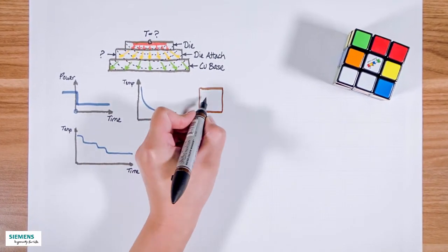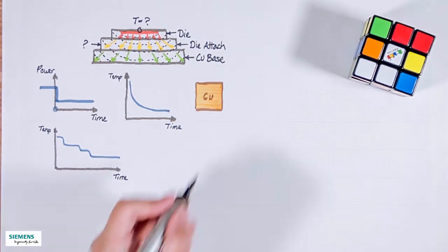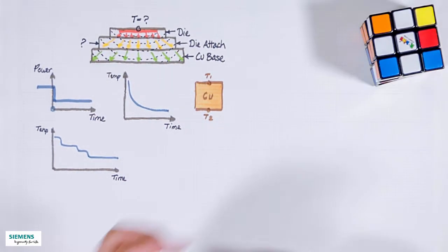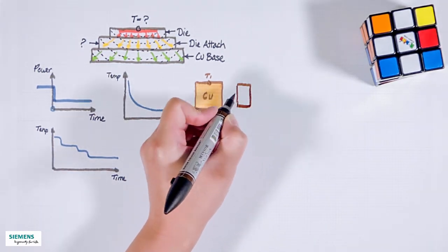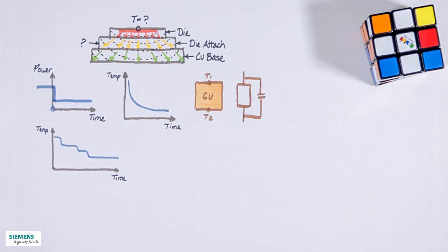If we have a simple structure, for example, just a block of uniform copper, how can we describe it? The heat comes from the top. We can describe it with a thermal resistance and a parallel connected thermal capacitance. The thermal resistance will make sure that if we heat it up from this point, the temperature will be different here.